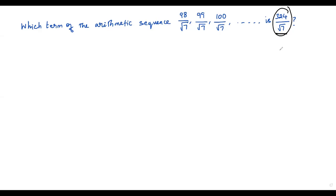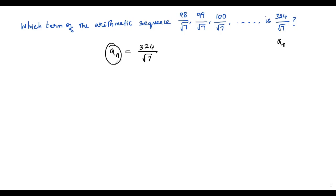We need to find the position of this term — whether it's the 100th term or some other term. I'll assume 324/√7 is the nth term of the arithmetic sequence, so aₙ = 324/√7. The formula for the nth term of an arithmetic sequence is: a1 + d(n − 1) = 324/√7.